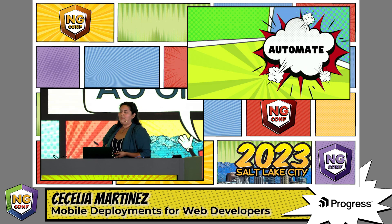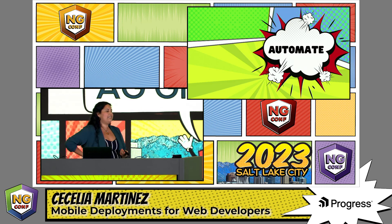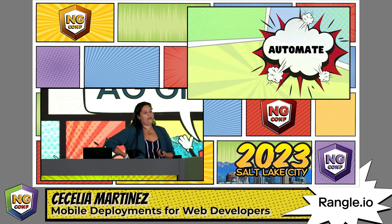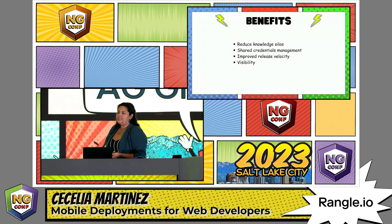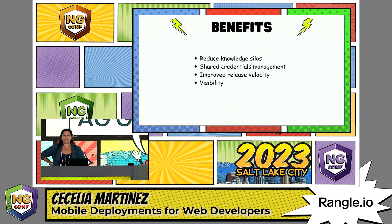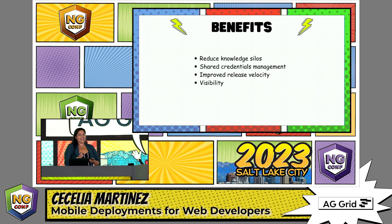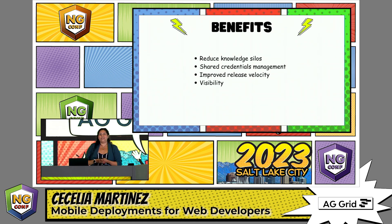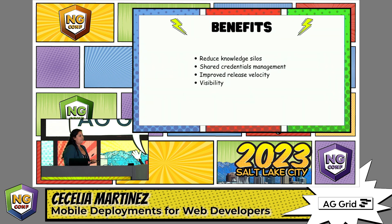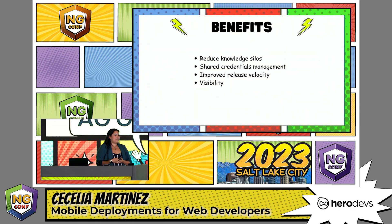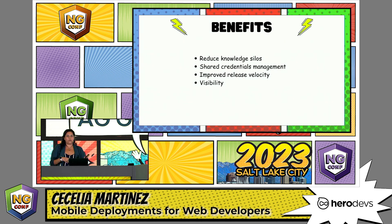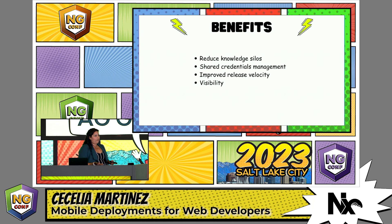There's a lot that goes into the mobile deployment process, and anywhere you can integrate automation makes it easier. Benefits of automation include reducing knowledge silos on your team — many teams have one person responsible for deployments, which creates a real bus problem. By automating the process, everybody on the team has better access and understanding. Automation also allows for shared credentials management of those secure credentials, improved release velocity, and visibility into what triggered a build, what version of your code base was used, and what environment variables were being used.